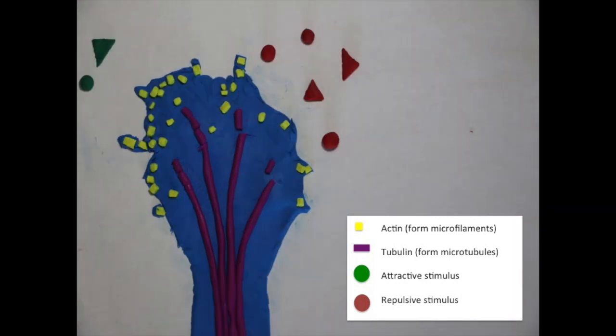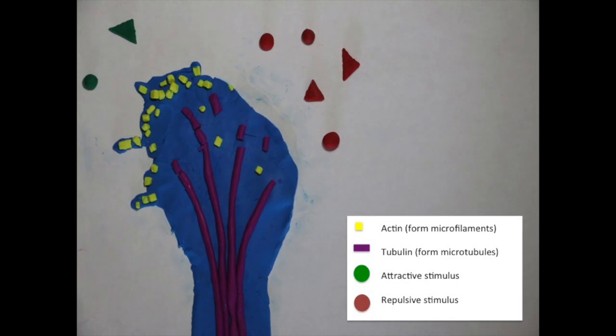Instead, actin and tubulin are transported to the opposite side of the cell to extend the growth cone away from the repulsive cues.